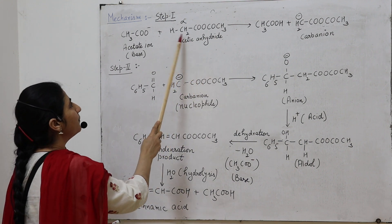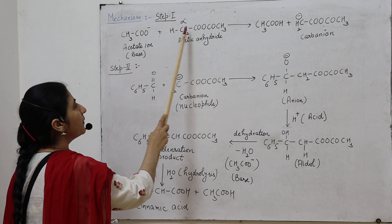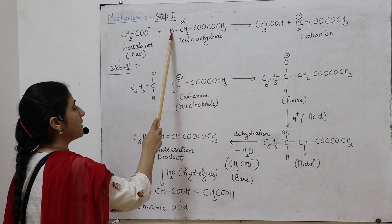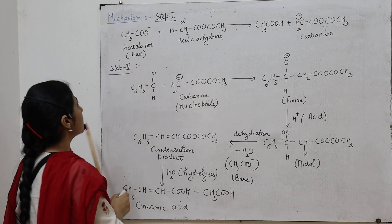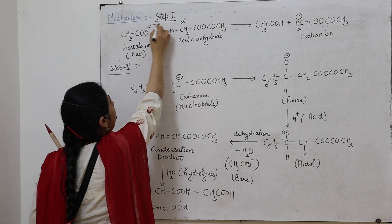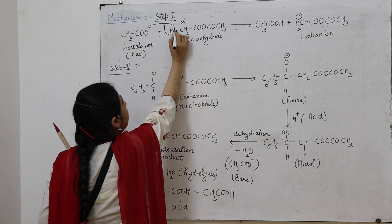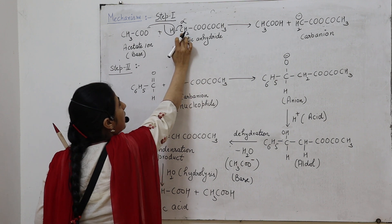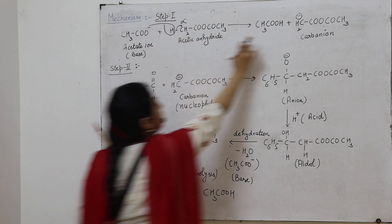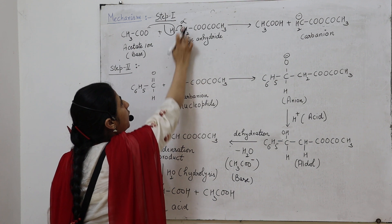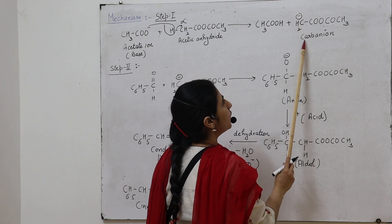In acetic anhydride, the alpha carbon is the carbon attached next to the functional group. The hydrogen atom attached to this alpha carbon is known as the alpha hydrogen. The acetate ion, acting as a base, abstracts the H⁺ from this alpha carbon of the acetic anhydride. As a result, the carbon-hydrogen sigma electrons move toward the carbon, forming acetic acid. The carbon then acquires a negative charge, producing a carbanion.